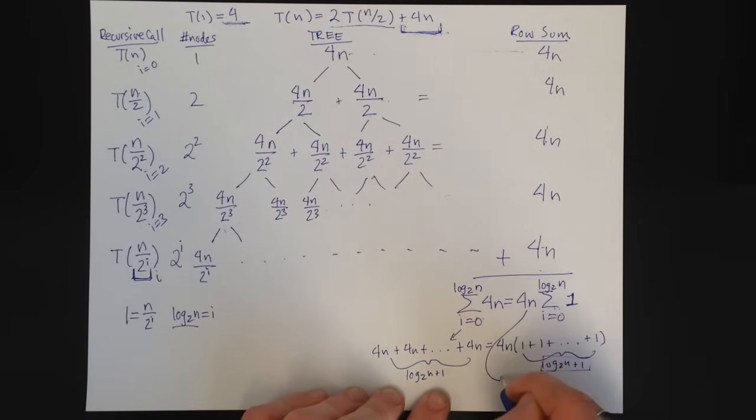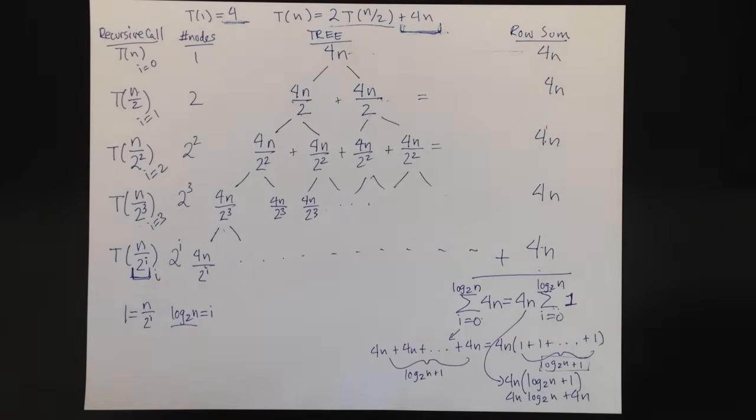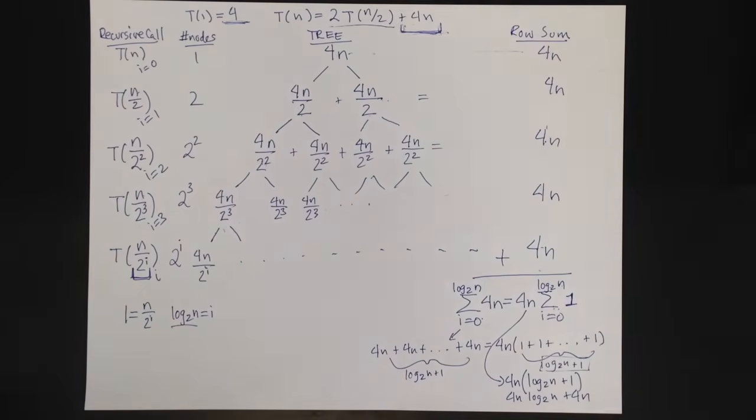So this becomes now, let me just write this down here, 4n times log base 2 of n plus 1, which gives us 4n log base 2 of n plus 4n. And that is how to solve that using the tree method.